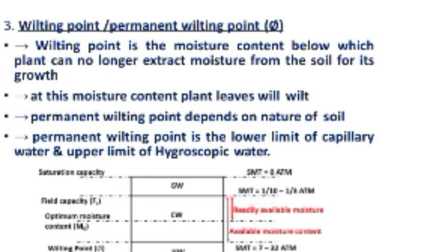Field capacity is also a melting point — it is the permanent wilting point. The wilting point means the moisture content below which plants can no longer extract moisture. There is only hygroscopic water remaining. The plant roots can no longer absorb moisture. At this moisture content, plant leaves will wilt.